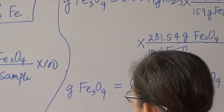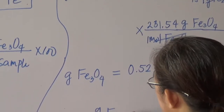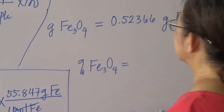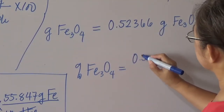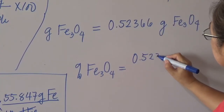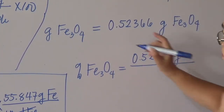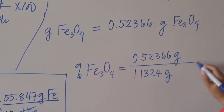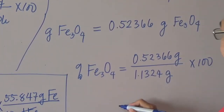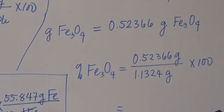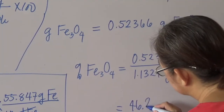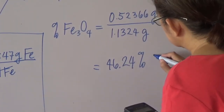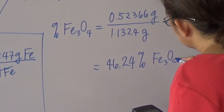To solve for percent magnetite present in the sample: mass of magnetite, 0.52366 grams, divided by mass of sample, 1.1324 grams, multiplied by 100, equals approximately 46.24% magnetite.